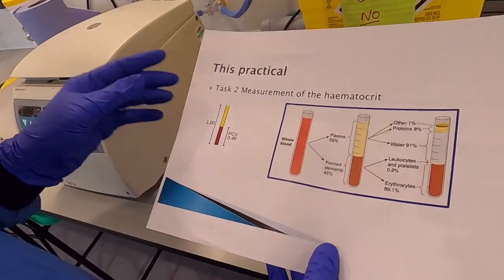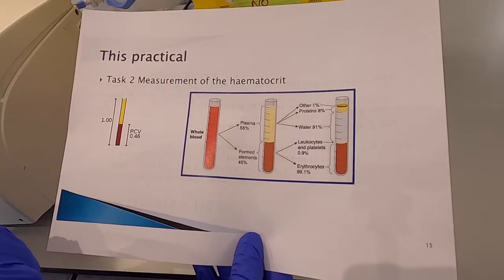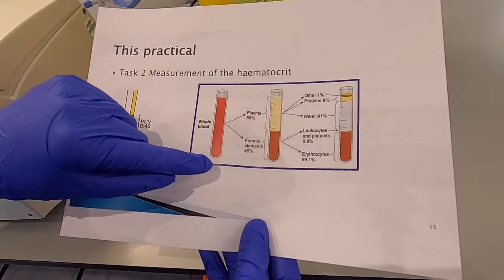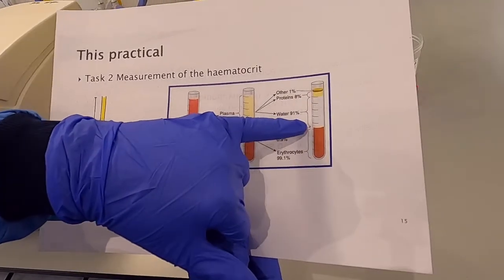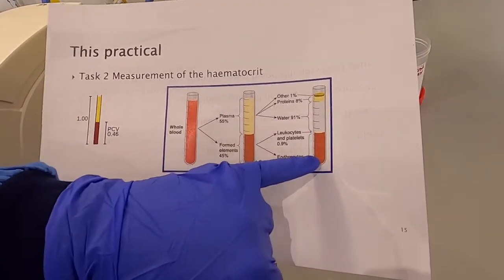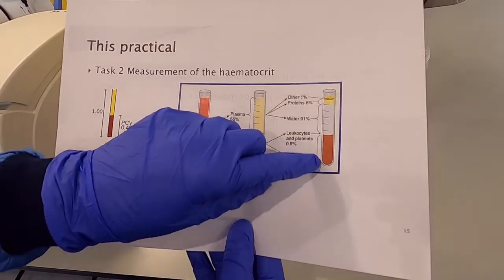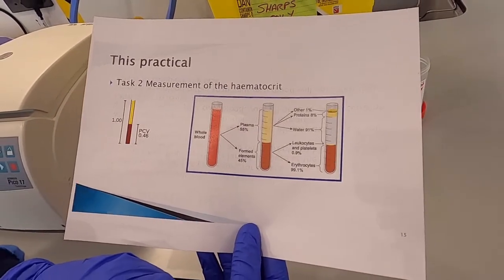So we're going to be taking whole horse blood and then we're going to be spinning that blood sample to separate into the plasma layer and the formed elements layer so that we'll see the white blood cells and then the red blood cells. We're going to be measuring this packed cell volume, the packed cell volume of red cells at the bottom of our centrifuge tubes.